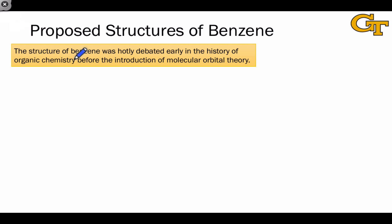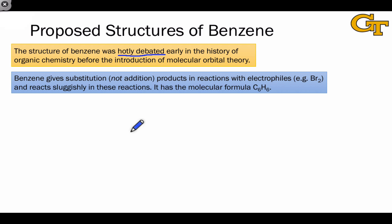Benzene seemed to violate some of these rules, and for this reason the structure of benzene was hotly debated in the early history of organic chemistry. This was before the introduction of molecular orbital theory, so chemists couldn't use quantum chemistry software to see molecular orbitals and optimized geometry. All that the early organic chemists had to go on were qualitative observations of benzene's behavior in chemical reactions and information from stoichiometry like the molecular formula.